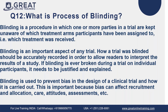Blinding is of different types: single-blinded, double-blinded, triple-blinded, quadruple-blinded, and open trials. It depends on how many participants are blinded. In single-blinded, only the subject is blinded. In double-blinded, both the subject and investigator are blinded. In triple-blinded, the subject, investigator, and data assessor — the statistician — are all blinded.